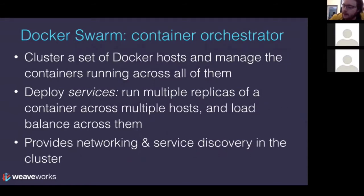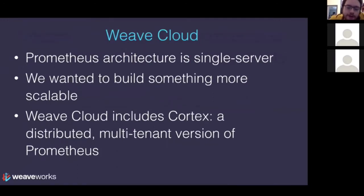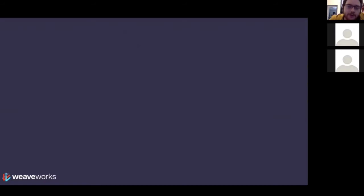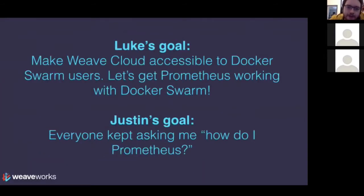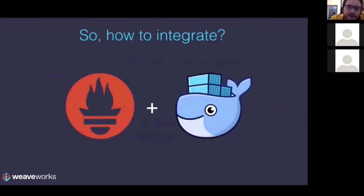Docker Swarm is a container orchestrator that lets you cluster a set of Docker hosts. It lets you deploy services — multiple replicas of a container across many hosts — and provides networking and service discovery in the cluster. This is what you need if you're deploying an application that needs to run on more than one machine, which is any non-trivial application really. Weave Cloud contains a scalable multi-tenant version of Prometheus, so we wanted to make it possible to take metrics gathered from a Docker Swarm cluster and push them up to Weave Cloud using Prometheus.